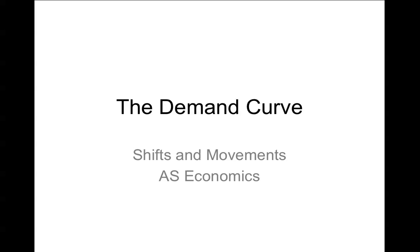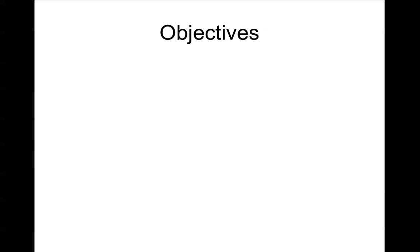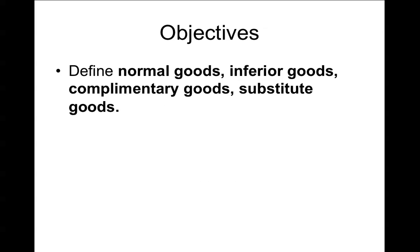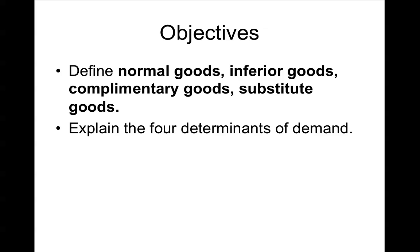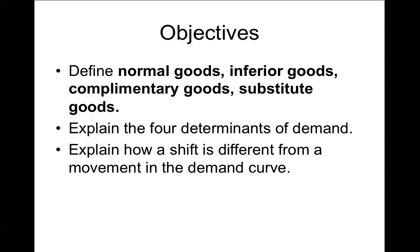This is a video lesson for AS Economics talking about the demand curve, the determinants of demand, and shifts and movements in the demand curve. The objectives of this lesson are that you can define normal goods, inferior goods, complementary goods and substitute goods. You should be able to explain the four determinants of demand, and you should be able to explain how a shift is different from a movement in the demand curve.